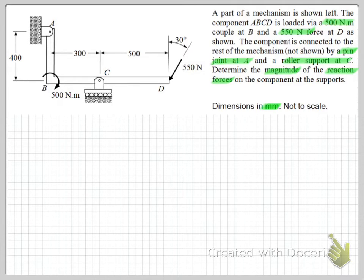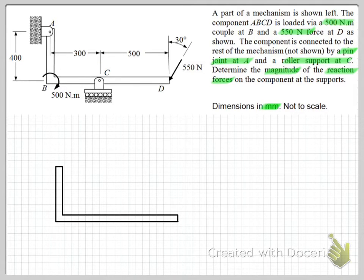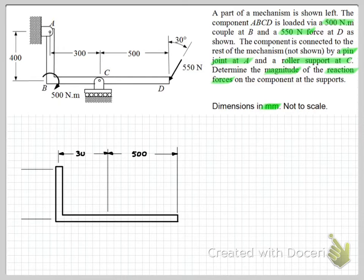The first part of our solution to an engineering mechanics equilibrium problem is to draw a free body diagram. That can be a simple representation of the external boundaries of the component we're analyzing. Once we've done that, we can start to put on some dimensions for reference and label the points A, B, C, and D, so we can reference where the forces, moments, and supports are.